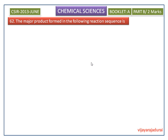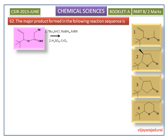We need to find the major product formed in the following reaction sequence. Tertiary butyl tin chloride is reduced by sodium borohydride giving tertiary butyl tin hydride. This tertiary butyl tin hydride decomposes with AIBN — that is azo-bis-isobutyronitrile — giving a tertiary butyl tin radical.